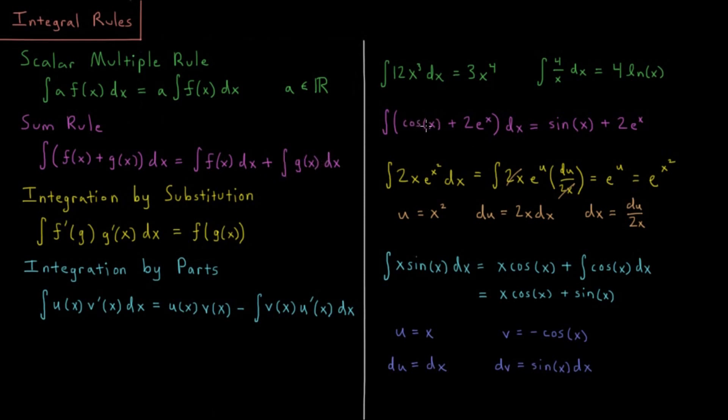If we have cosine of x plus 2 e to the x, the integral of that function is just the integral of cosine plus the integral of 2 e to the x, which is sine x plus 2 e to the x.